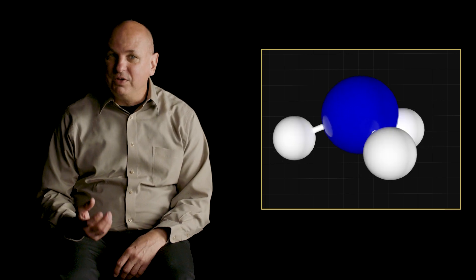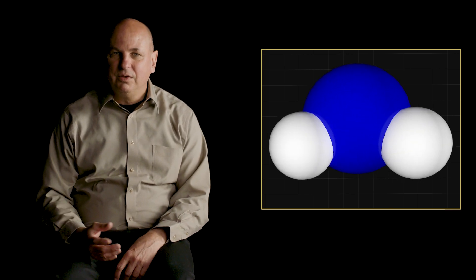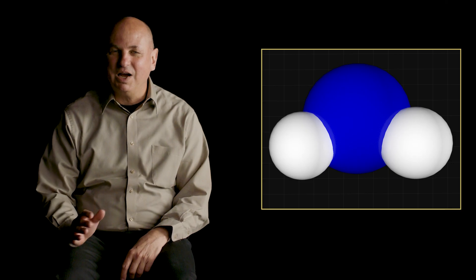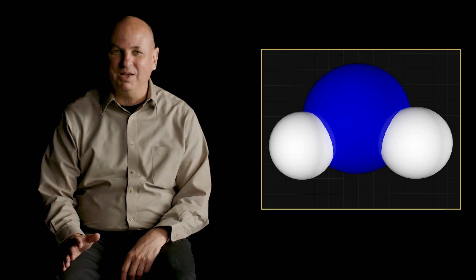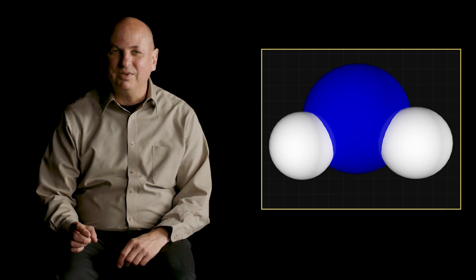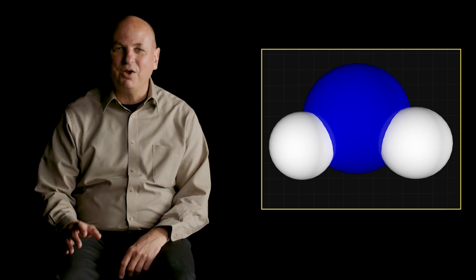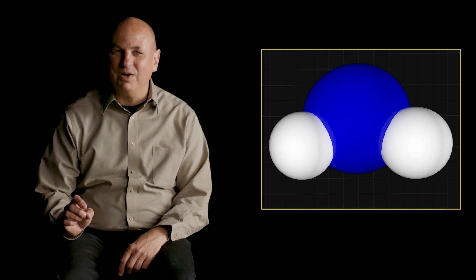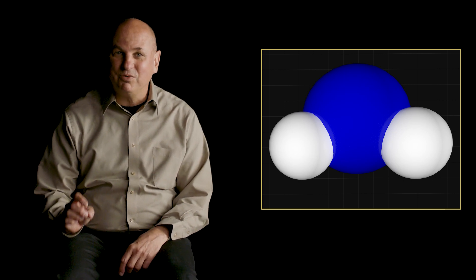However, the ball and stick model doesn't convey the size of the atoms or the molecule as a whole. To show size, we can use a space-filling model, which shows the volume that each atom occupies. This volume is due to the electrons in the atom. Notice how nitrogen and hydrogen atoms share space between them — this is because in a chemical bond, the atoms are sharing electrons, so the spheres representing electron density around each atom must overlap. But a space-filling model has some disadvantages: it makes it harder to see details like bond lengths and angles between bonds.